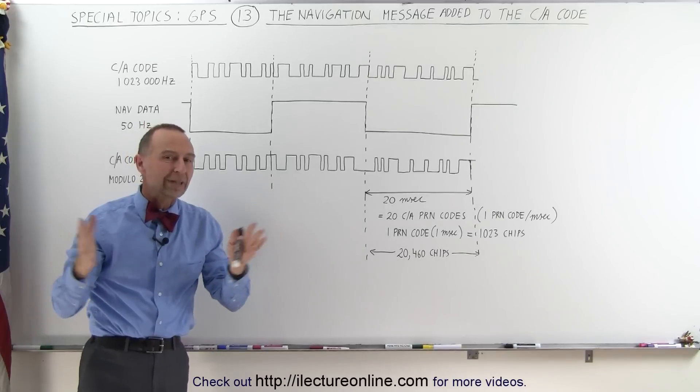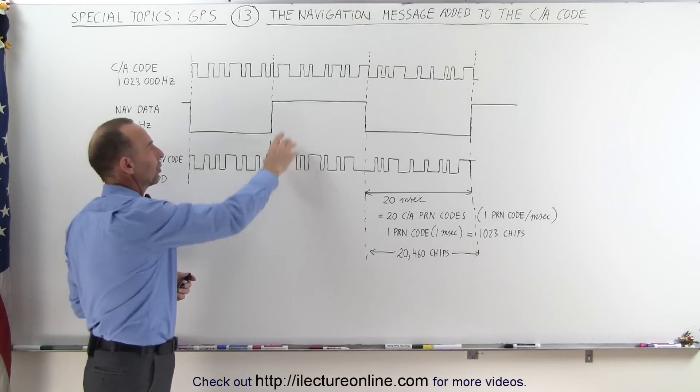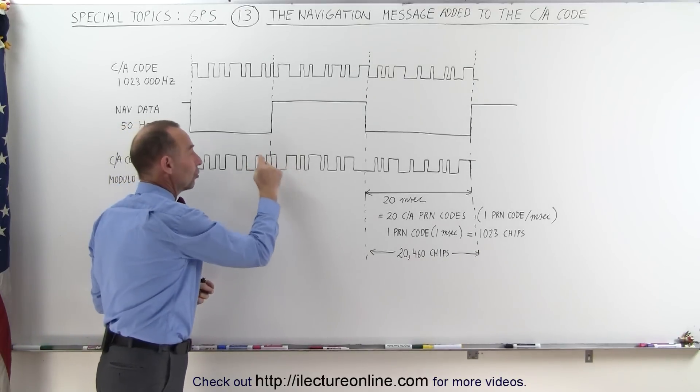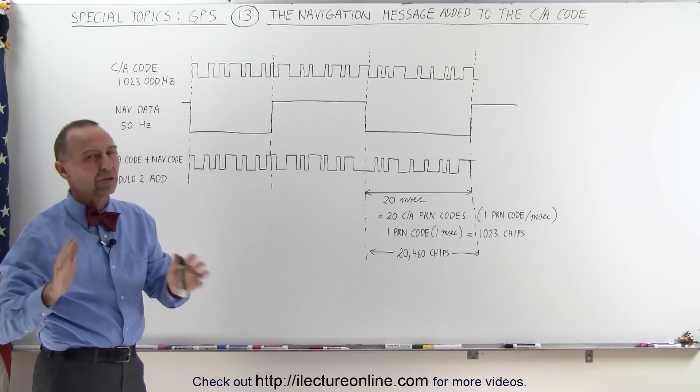And that is how the two codes get added together. Now, later on we will learn how the receiver knows that this was flipped data, because within the words of the navigation message, there will be a certain set of data there that will tell them that the data was flipped, and we'll get into the details later.